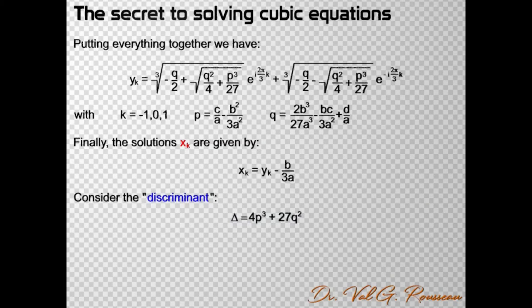We can notice that this quantity is just equal to 108 times the argument of the square root that appears in the expression of y. So, if Δ is positive, then the square root is real. If Δ is negative, then the square root is imaginary. And, of course, if Δ is 0, then the square root is 0.